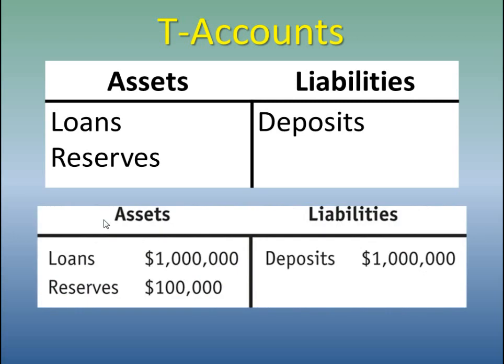In this example, we'd see a bank that's in pretty good shape. They've got $1 million worth of deposits. They have to keep $100,000 in reserve because of the 10% reserve ratio, and they've got loans of $1 million. So the bank actually has more assets than it has liabilities, which is good news.